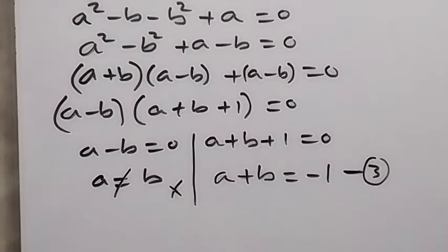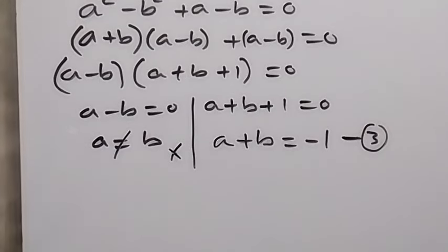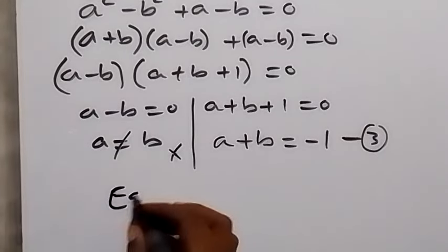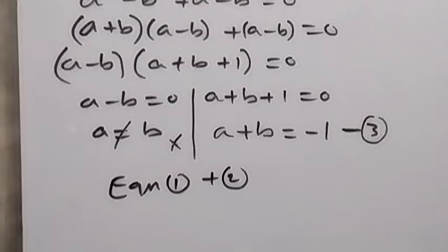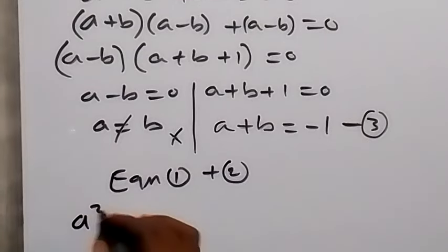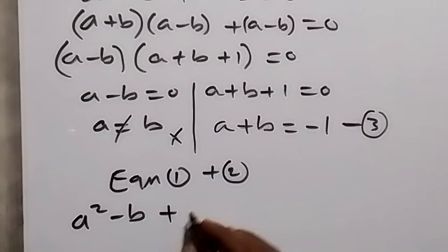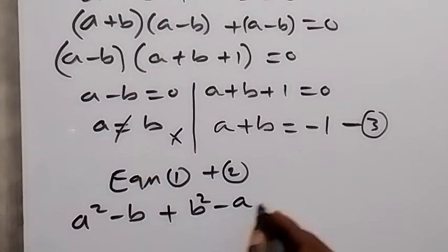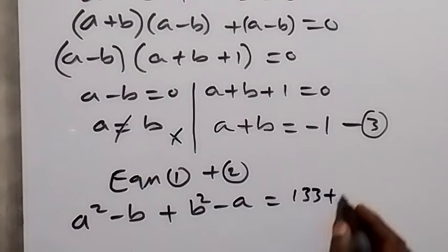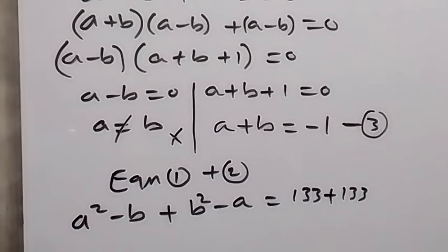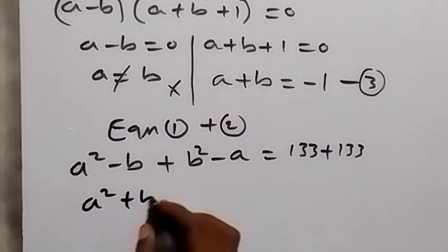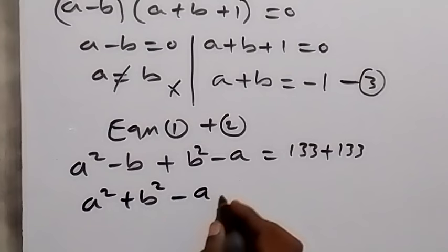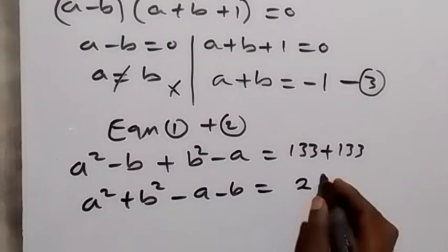In the next step, let's add the two equations. Equation 1 plus equation 2: on the left side we have a squared minus b for equation 1, plus b squared minus a for equation 2, equals 133 plus 133. Rearranging and bringing the squares together, we have a squared plus b squared, then minus a minus b, equals 266.